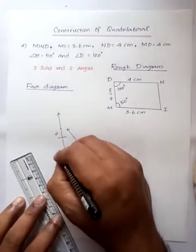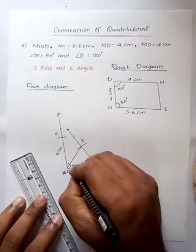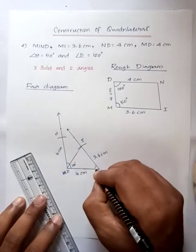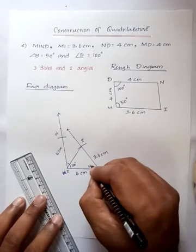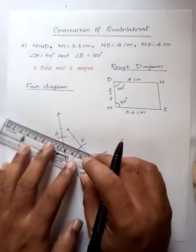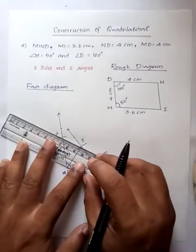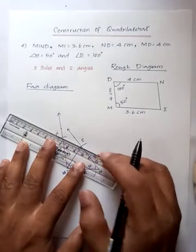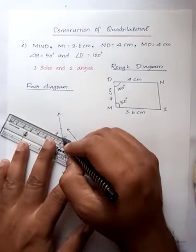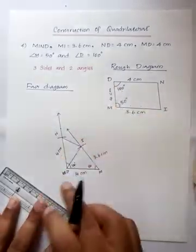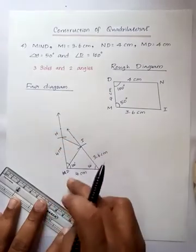Join N and I. Now we got the quadrilateral MIND.